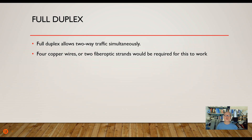Full duplex traffic means that I can send data two directions at the same time. I would need four copper wires to do this if using electrical signals, or two fiber optic strands. Sometimes we'll put two strands in one jacket to make it bi-directional; otherwise, it's only simplex or half duplex.